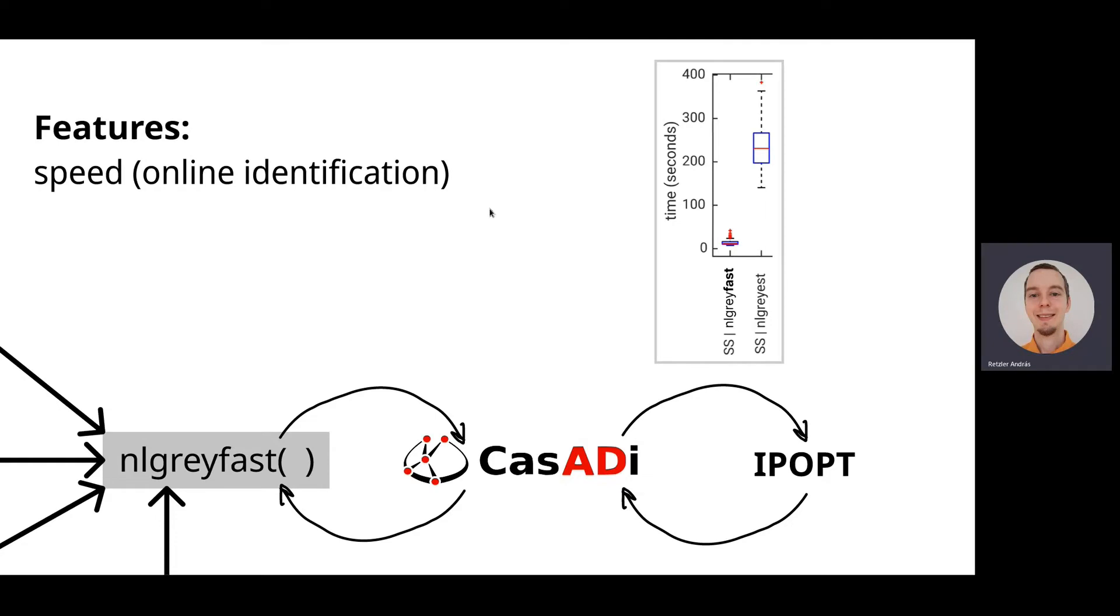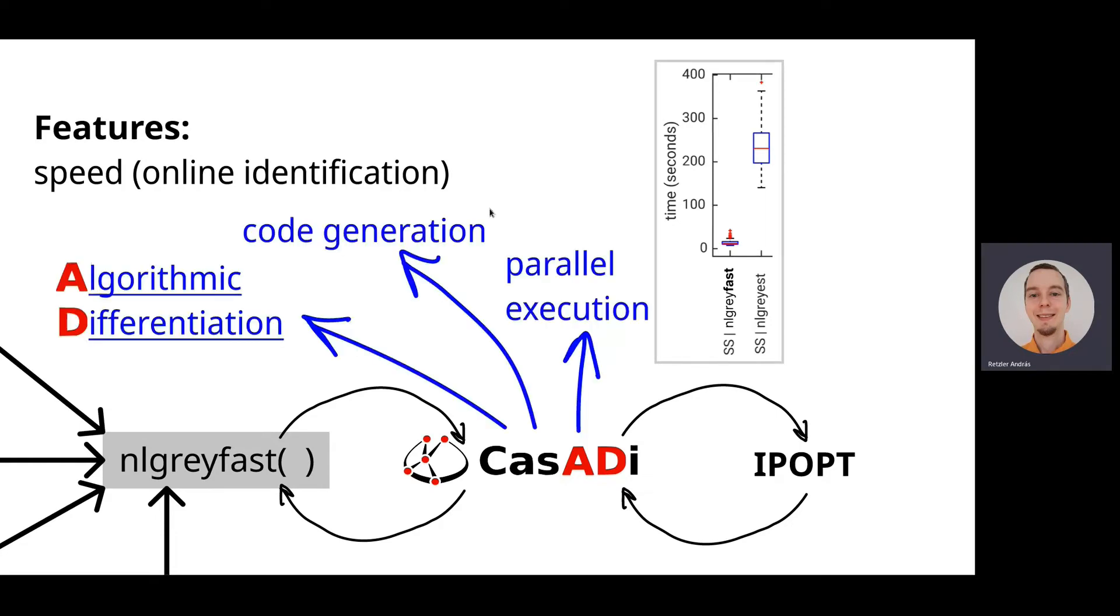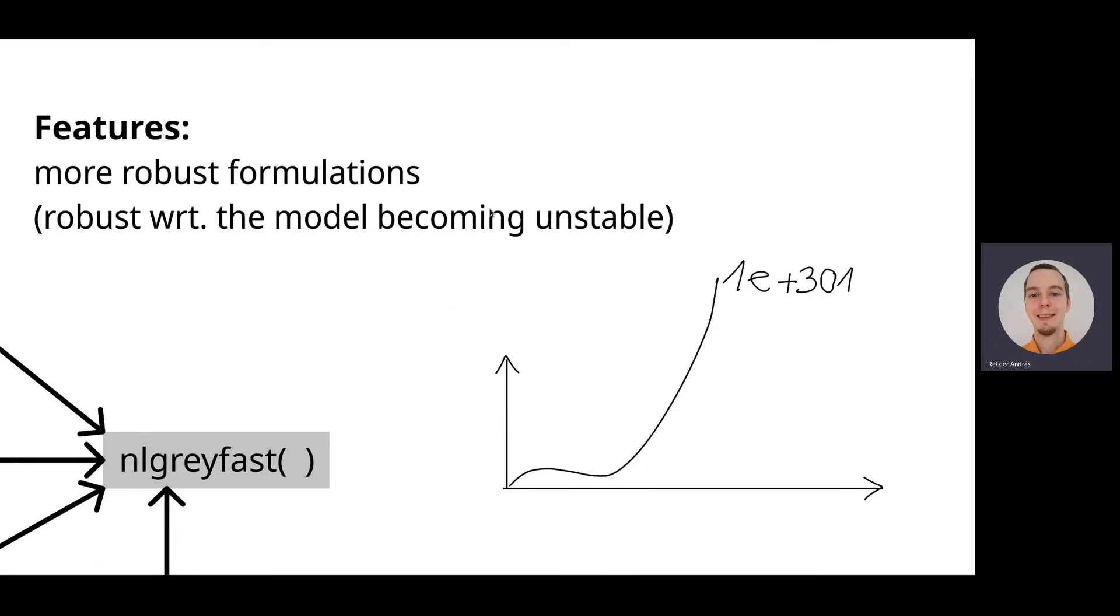We wanted it to be fast, in order to, if you want to combine identification with, for example, model predictive control, and you want to update the parameters in real time, then this thing can count. So in our comparison on the EMPS system, it was a magnitude faster for a single shooting formulation than the MATLAB toolbox implementation, because this tool can do some things in a computationally efficient way. And the other thing is it supports some formulations of the problem that are more robust with respect to the model becoming unstable. So that's been a topic a few times on this workshop already. How do we solve that?